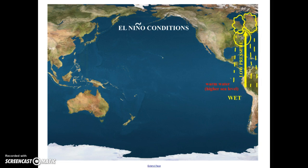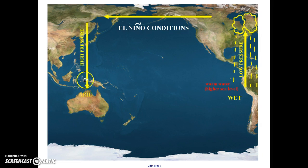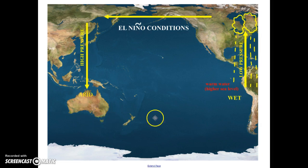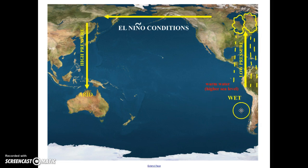This rising air also basically flips around the convection current. The air will rise, travel westward across the ocean, and now it's going to sink over Indonesia and Australia. So now they're dealing with arid air because of high pressure — normally it's low pressure. It basically just flipped around the whole convection system, completely changing the pressure of the air on the western and eastern parts of the Pacific.